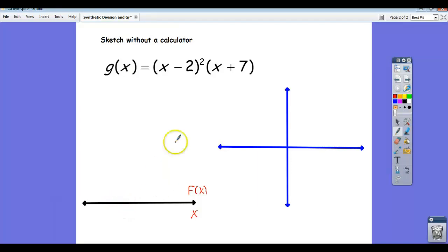So I'm going to put the zeros in order on this number line. It looks like that x + 7 contributes a negative 7 as a zero, and that x - 2 means that 2 is one of the zeros.